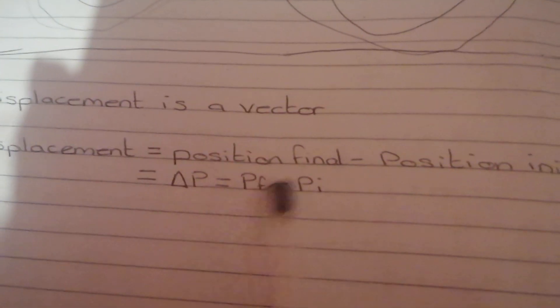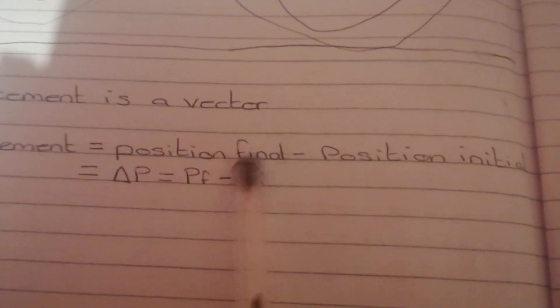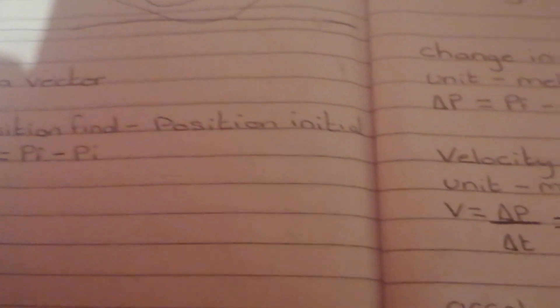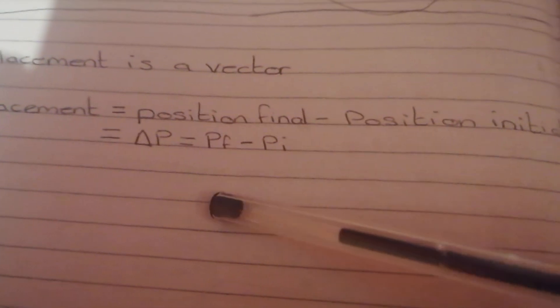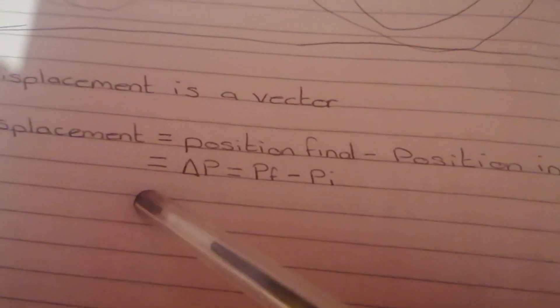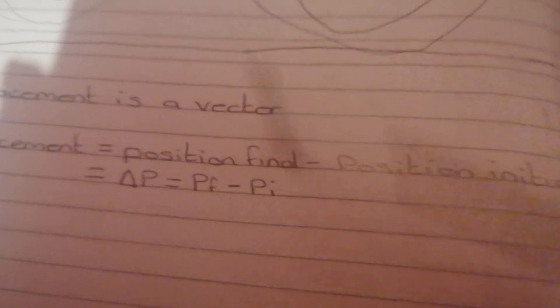So displacement is the position final minus the position initial or the changing position which is the position final minus position initial. So obviously I did Riley's experiment and obviously the position final would be here minus position initial which would be down here. That is your vector, that is your displacement and displacement is a vector. We know that we're changing the density, we changed it from here to here. Therefore it has a vector because the position changed, there was a change in position, so there's a vector. By changing the density there is a vector because it moved.